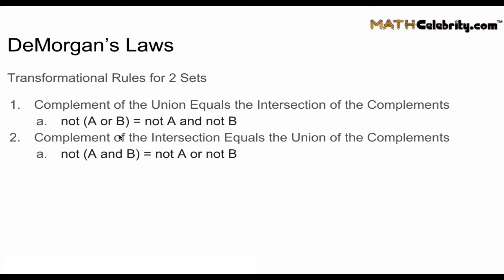It's important to know that whenever you see 'or,' that corresponds to a union. And whenever you see 'and,' that corresponds to an intersection. So: and = intersection, or = union.